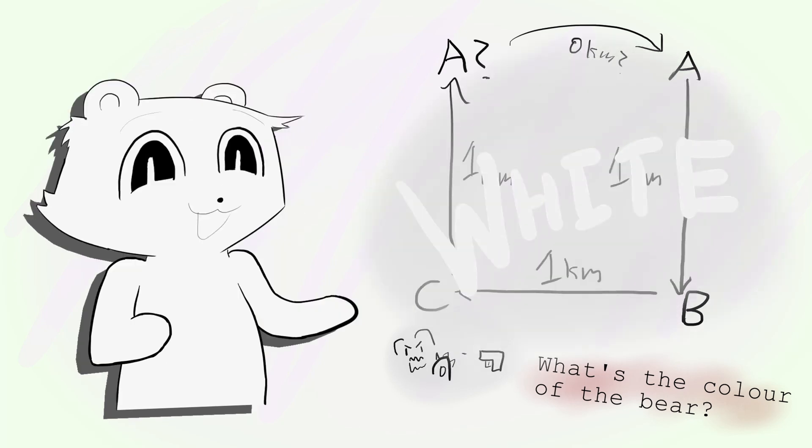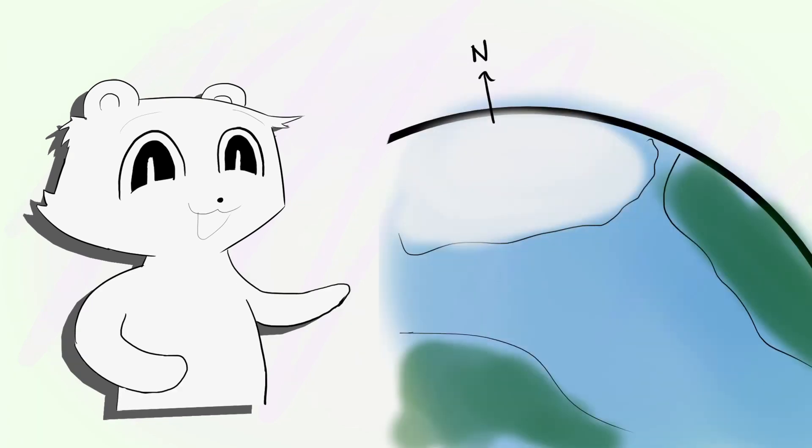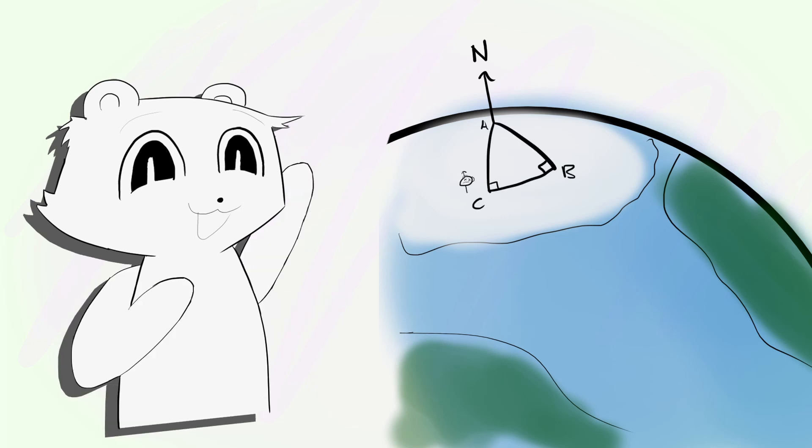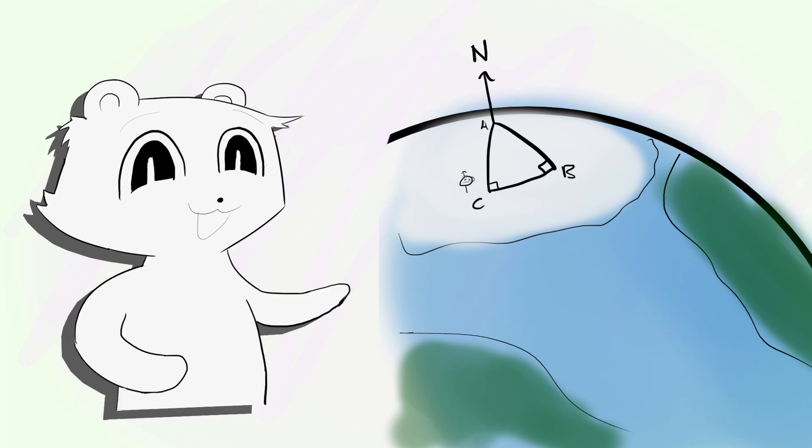If you answered white, then you've heard of this riddle before. The only place on Earth where it's possible to return to where you started after going south, east, then north again, is the North Pole. Therefore, the bear must be polar and white. Somehow, we created a triangle with two right angles. The angles sum up to greater than 180 degrees.